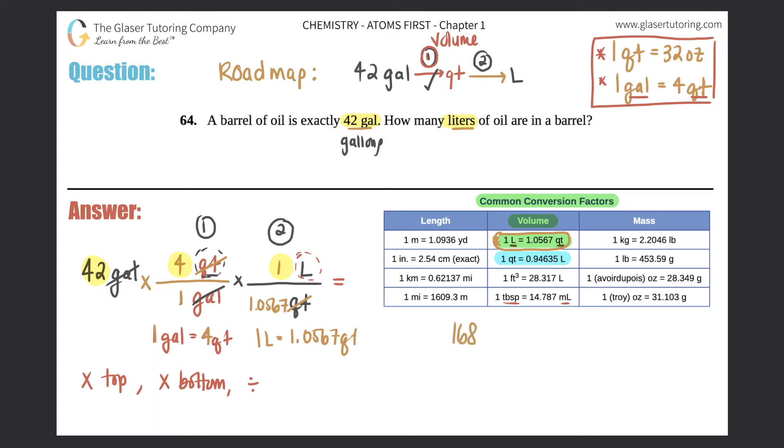Now I multiply everything that's on the bottom, so 1 times 1.0567, which would just be 1.0567.